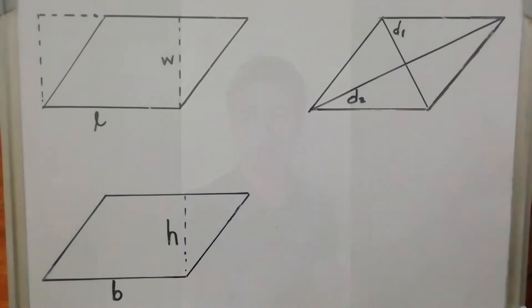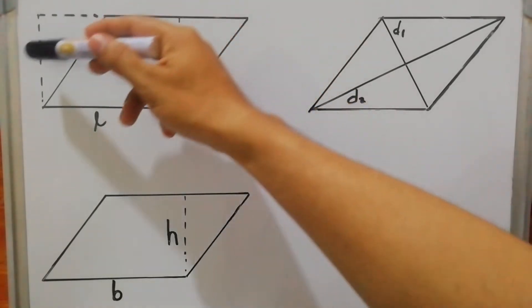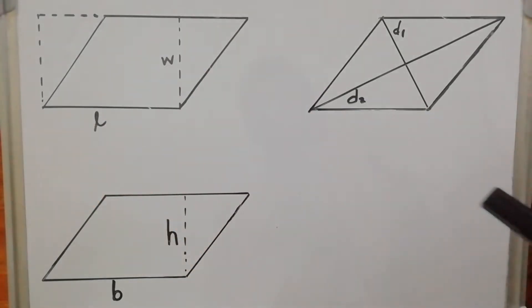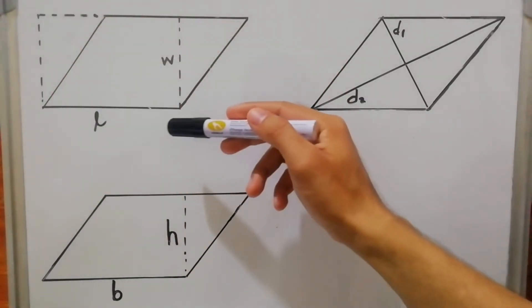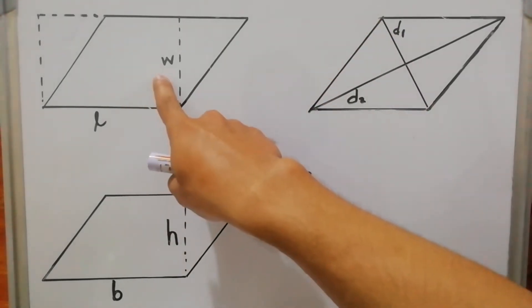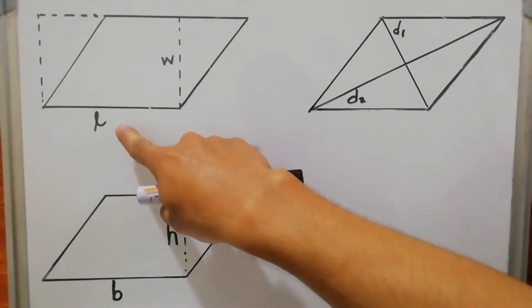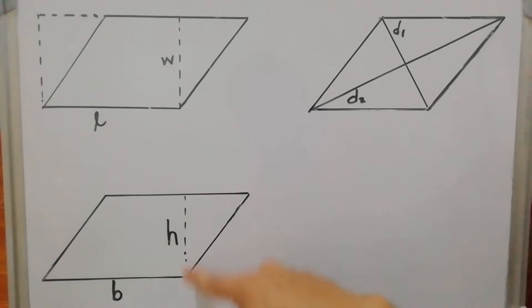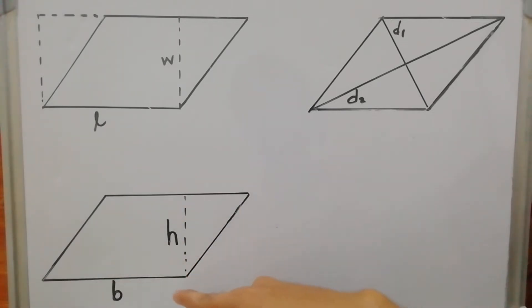The area of a parallelogram is derived from the area of the rectangle. We draw an imaginary rectangle since the parallelogram has two slanted sides. It is derived from the formula: length times width. In a parallelogram, we use length as base (b) and width as height (h) — the vertical line perpendicular to the base.